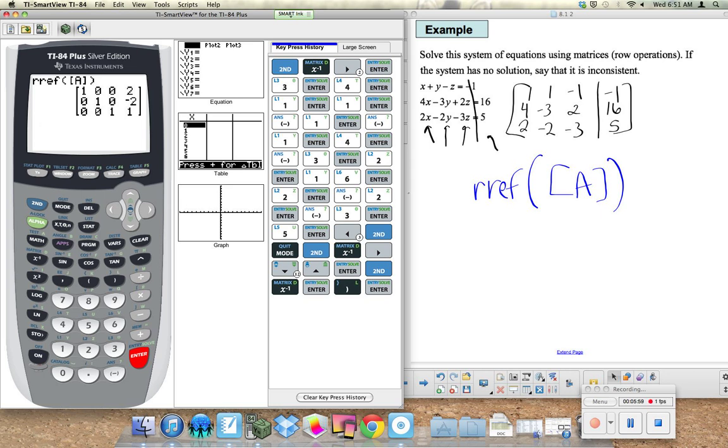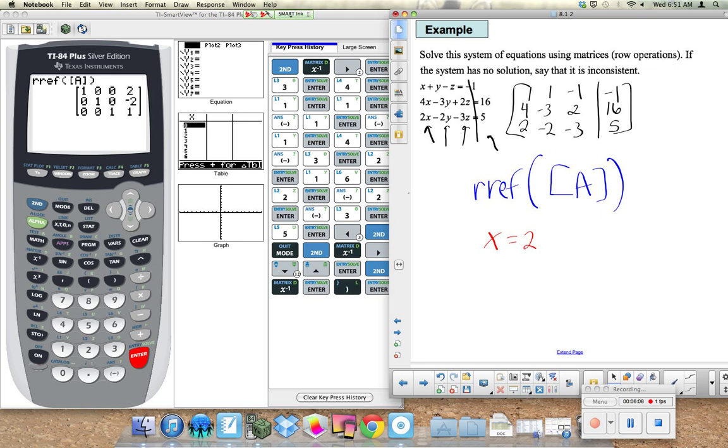So yes of course you need to know how to interpret that and what that means. Which is why you spent part of the day doing that in class. So the x value is going to be 2. The y value is negative 2. And the z value is 1 for this matrix. So we are done. We could check our point 2, negative 2, 1 into our 3 equations. If we wanted to be sure on a test that we didn't enter anything incorrectly. It's a great idea. Can't hurt. Use your time wisely and check those answers when you can.